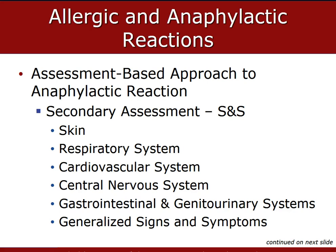Moving on to the cardiovascular system during the secondary assessment: is there an increased heart rate, dropped blood pressure, irregular pulse, or absent radial pulse indicating severe shock? Checking the central nervous system: any increased anxiety, lightheadedness, unresponsiveness, disorientation, restlessness confirming hypoxia, seizures, or headache? Moving to the GI/GU systems: any nausea, vomiting, abdominal cramping, diarrhea, difficulty swallowing, or loss of bowel control? GU: urgent need to urinate or cramping? Generalized signs and symptoms also include itchy watery eyes, runny or stuffy nose, sense of impending doom, complaints of not feeling well, and generalized weakness or discomfort.